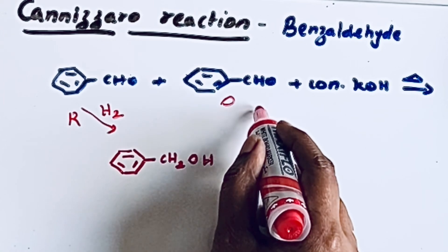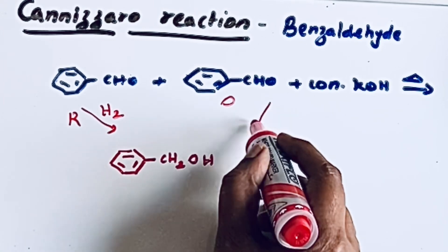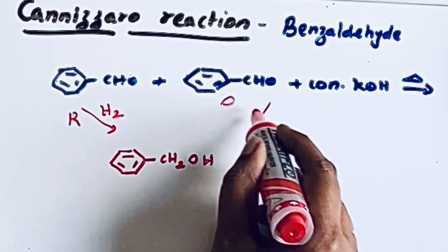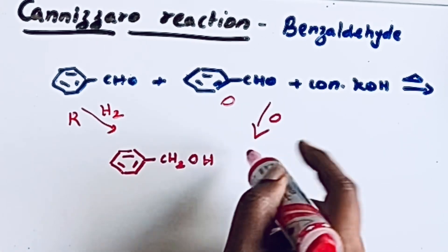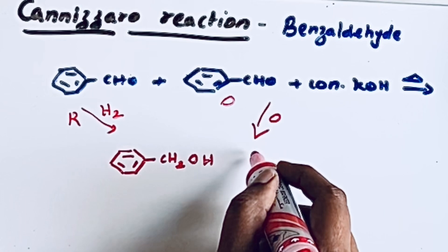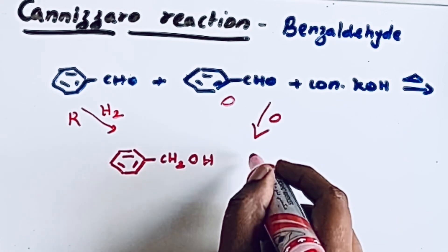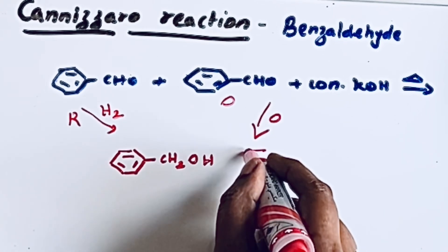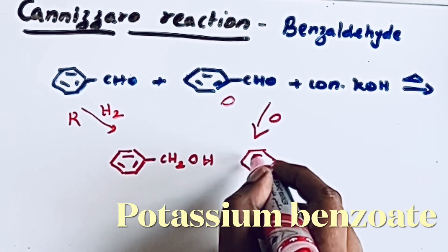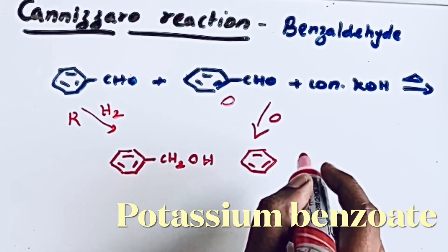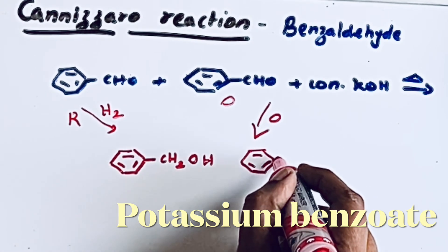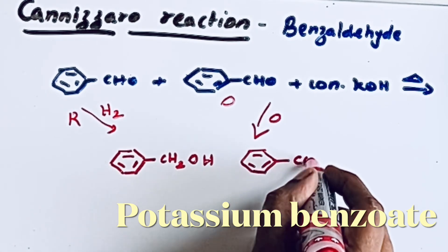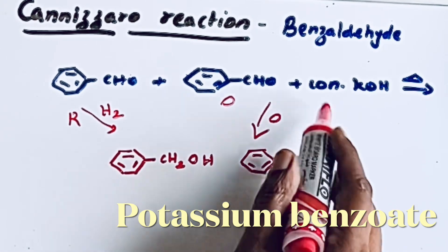When it undergoes oxidation — that means addition of oxygen — we will get a salt of carboxylic acid.